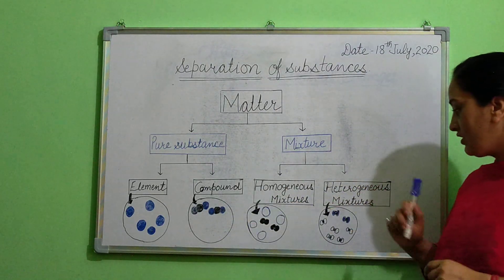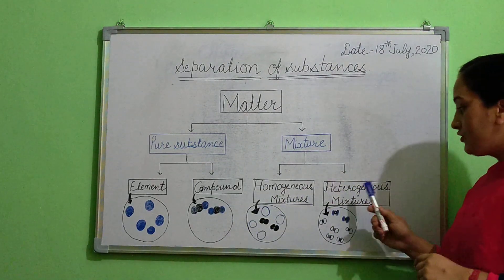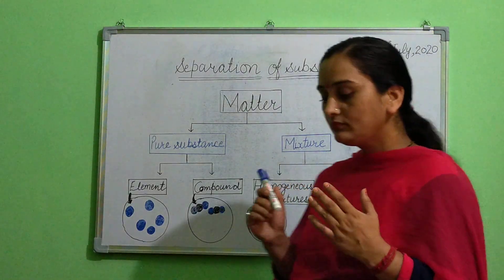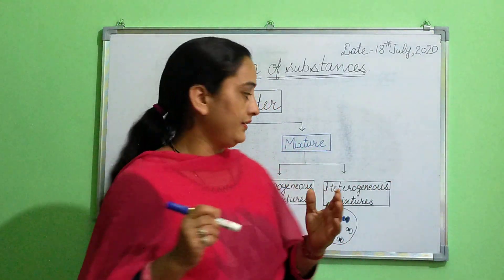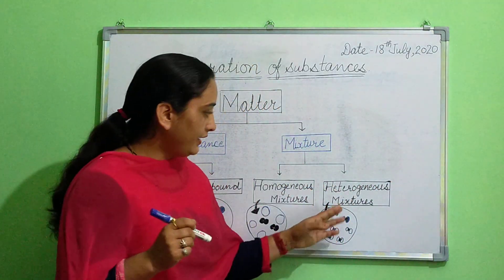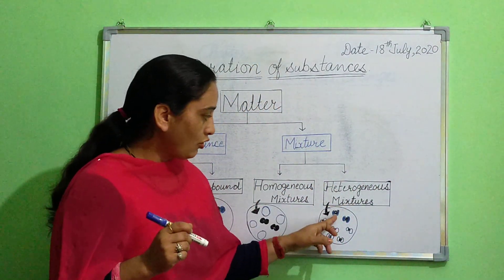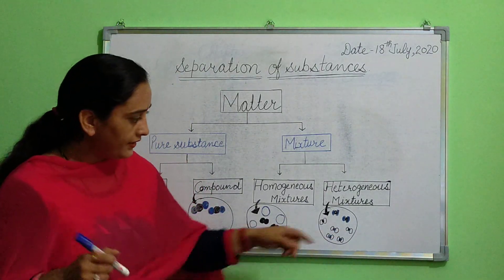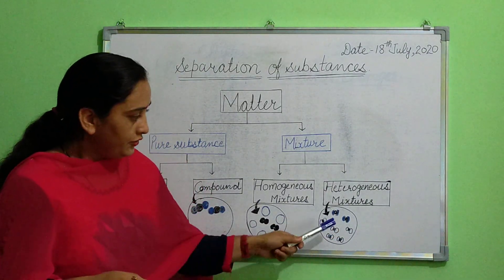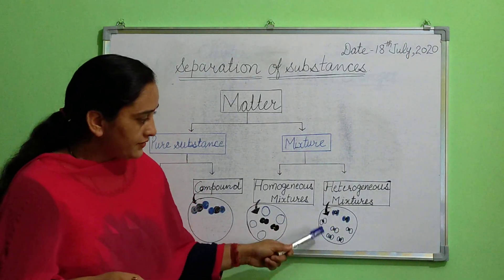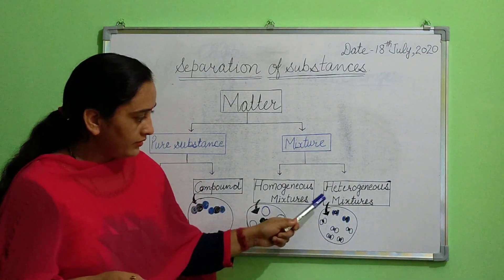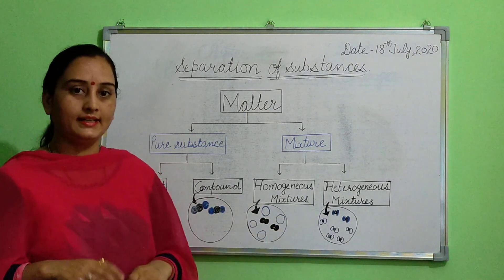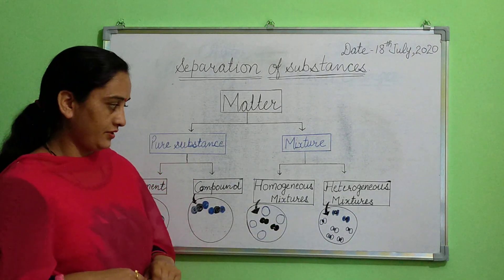Next, heterogeneous mixture. In a heterogeneous mixture, we can separate the components by physical methods. And here, uniform distribution is absent.